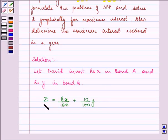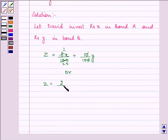So let Z be equal to 8X upon 100 plus 10Y upon 100. Or on simplifying, we can write it as Z equals 2 by 25 of X plus 1 upon 10 of Y. So we need to maximize this interest.